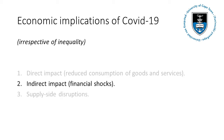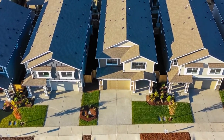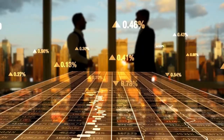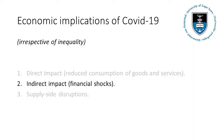The second impact is an indirect impact and it comes through changes in financial assets. For example, if the virus reduces the values of people's houses and stocks in the stock market, they will probably reduce their consumption to make up for that loss of wealth.